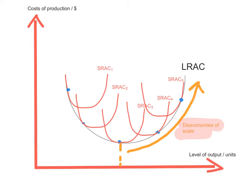Decreasing returns to scale occurs when the firm increases all levels of its inputs — say by 100% — but the output doesn't increase by the same amount; it increases by a lower amount. For example, if you double all of your inputs but your output only increases by 20%, you have experienced decreasing returns to scale as well as diseconomies of scale.